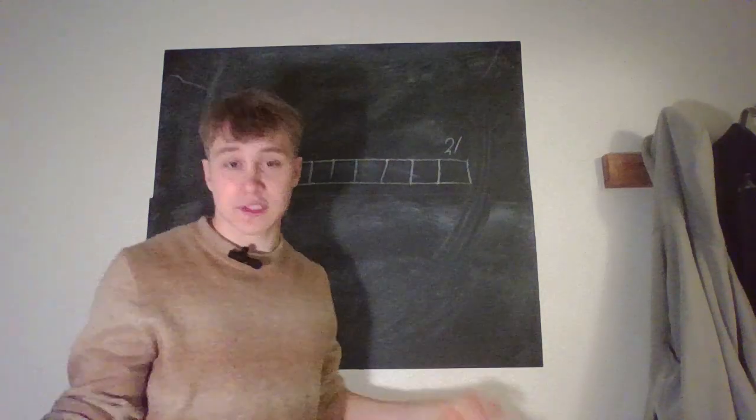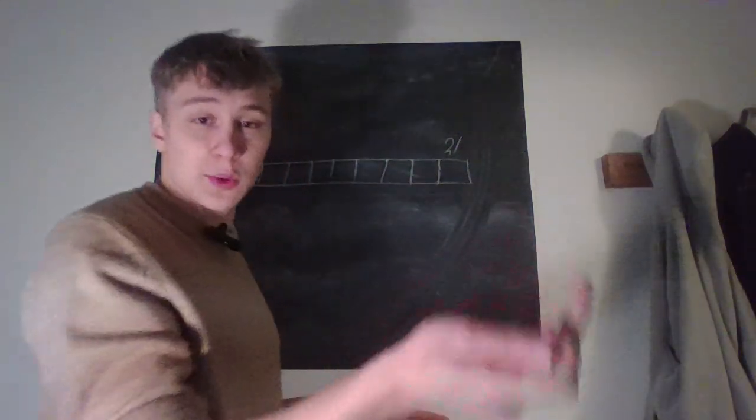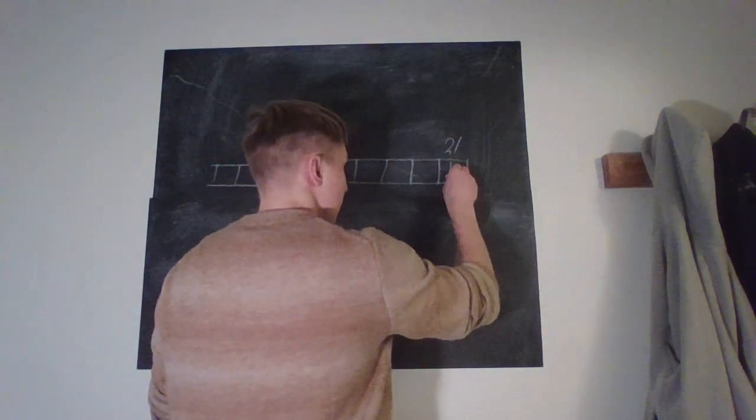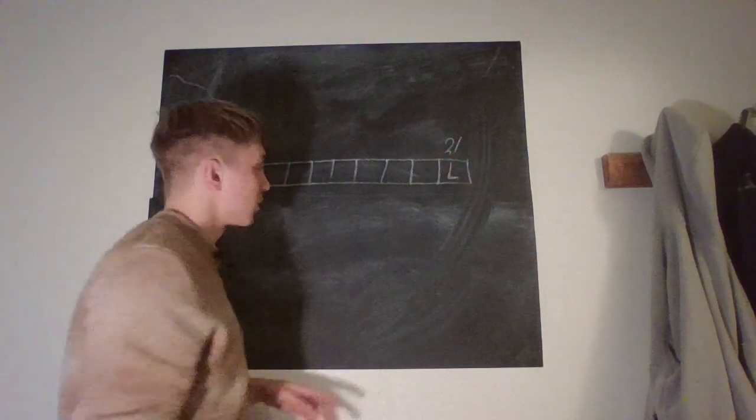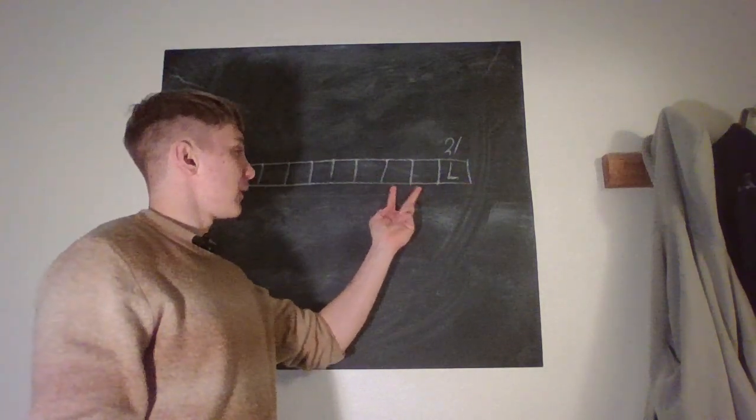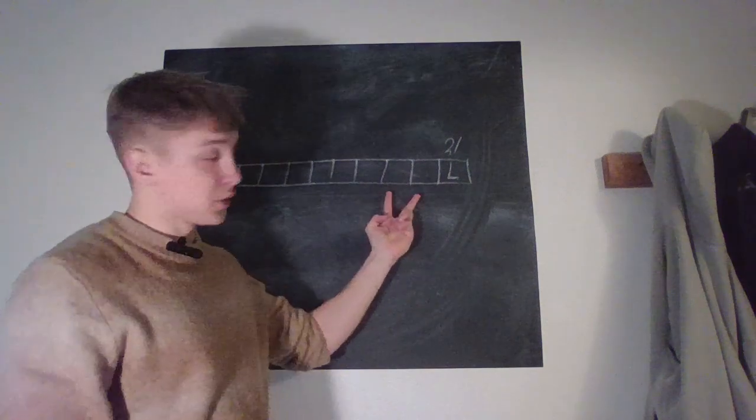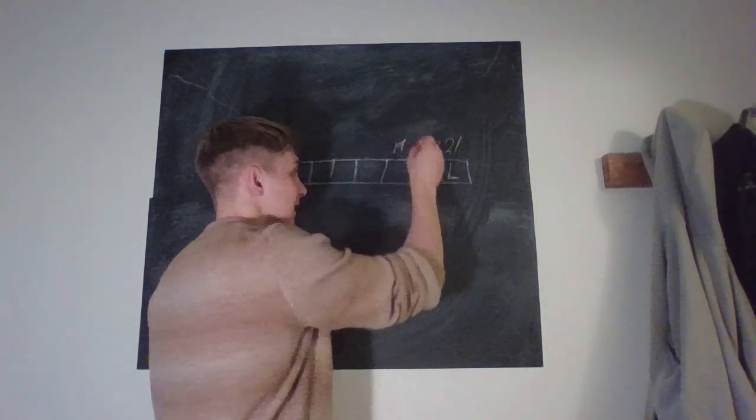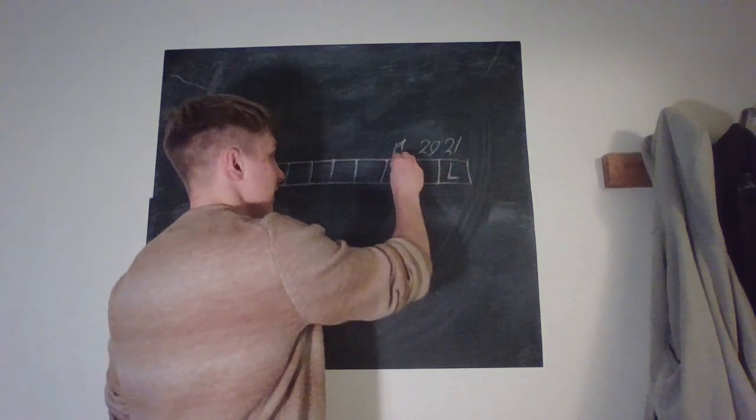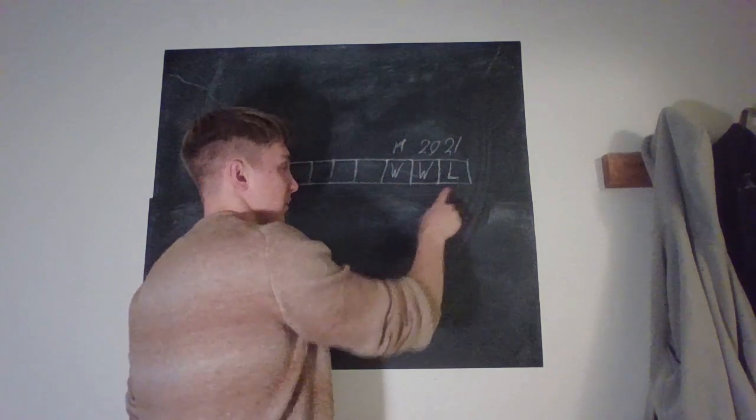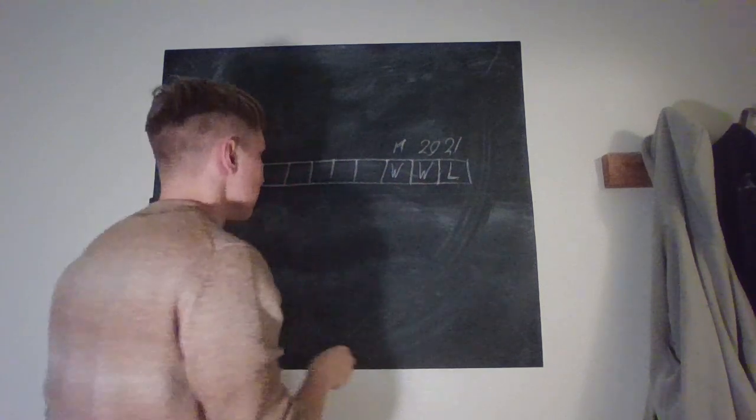So that is obviously a lose position. But that also means that if it was your turn to add one or two, and you were standing at 20 or 19, then you've obviously won because you can just choose. If you're there, you add two, so you get 21. If you're there, you add one, so you get 21.